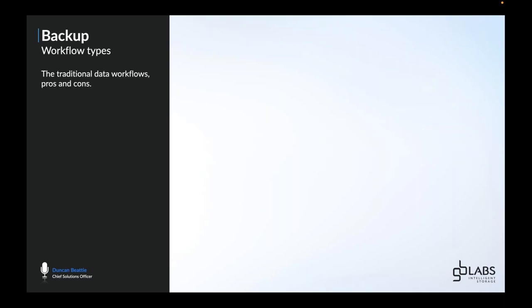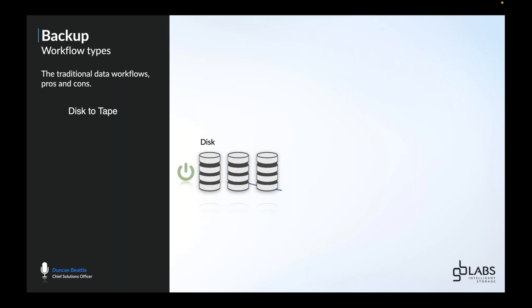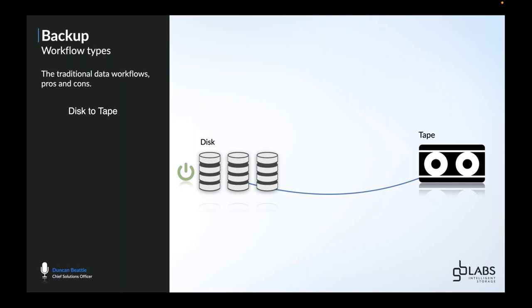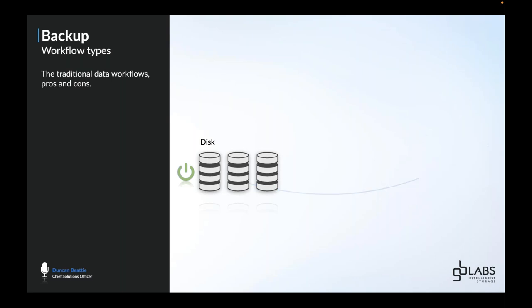Let's talk about traditional workflows and the pros and cons. Starting with disk to tape: you have your storage system and a tape drive. When you're not producing huge amounts of data, this is pretty useful. You take your tape and every night on a schedule you back up your live work — your media, dailies, rushes, raw media. More recently this has been replaced by cloud because it's easy. However, there is a limitation on speed. Backing up to tape you can get around 300 megabytes per second, whereas cloud is going to be a lot slower.